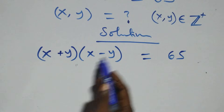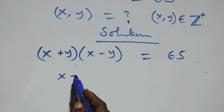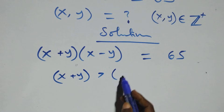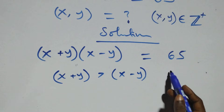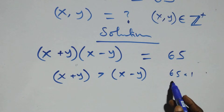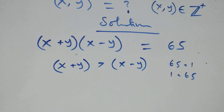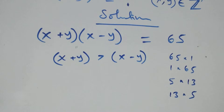Since x and y are members of the positive integers, it implies the first bracket, which is x plus y, is greater than the second bracket, which is x minus y. The possible ways of writing 65 — the factors of 65 — are: 65 times 1, or 1 times 65, or 5 times 13, or 13 times 5.